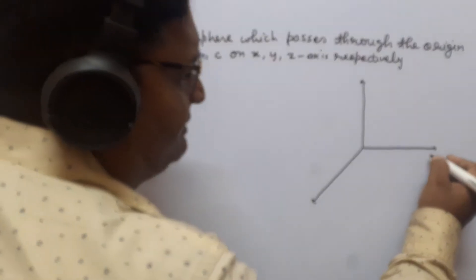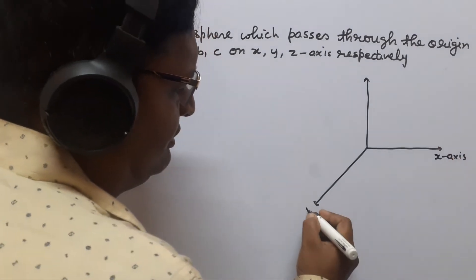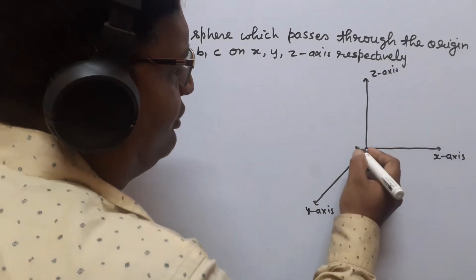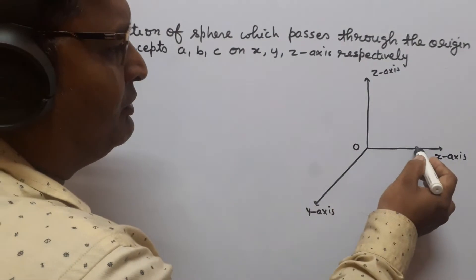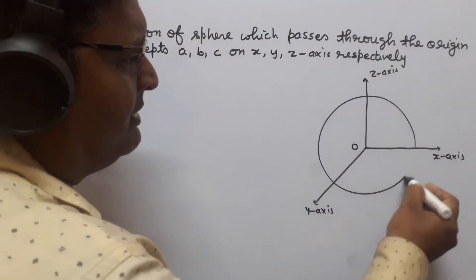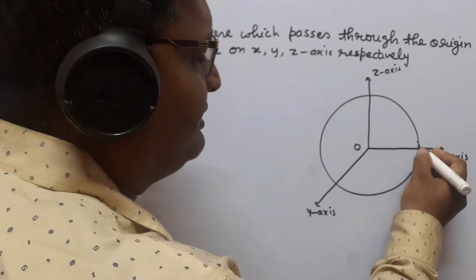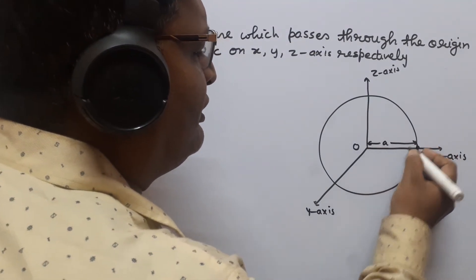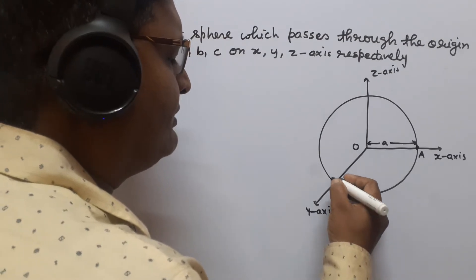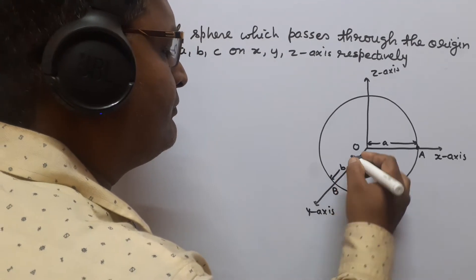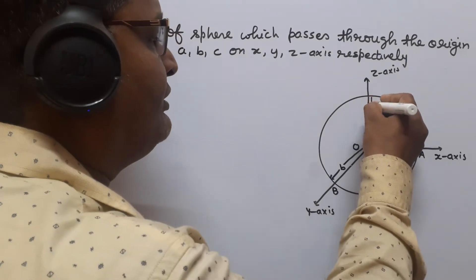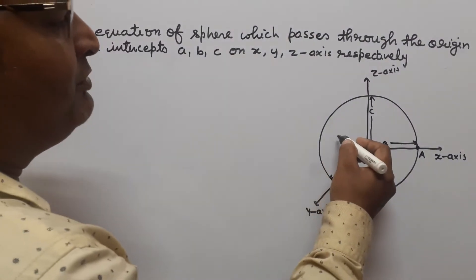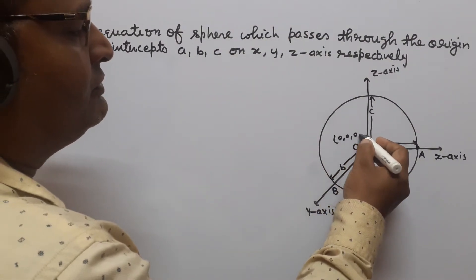Suppose that this is the X axis, this is the Y axis, this is the Z axis, and O is the origin. Let us suppose that this is the sphere which makes intercepts small a on X axis, small b on Y axis, and small c on Z axis. This sphere also passes through the point (0, 0, 0).